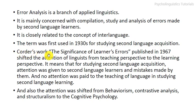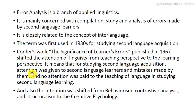Corder's work 'The Significance of Learner's Errors,' published in 1967, shifted the attention of language from a teaching perspective to a learning perspective. This means that for studying second language acquisition, attention was given to second language learners and the mistakes made by them, rather than to the teaching of language.